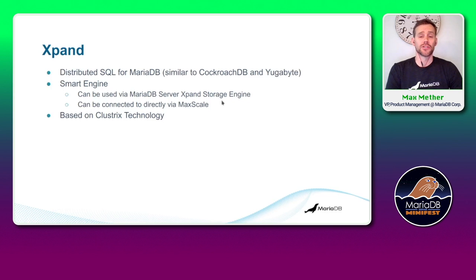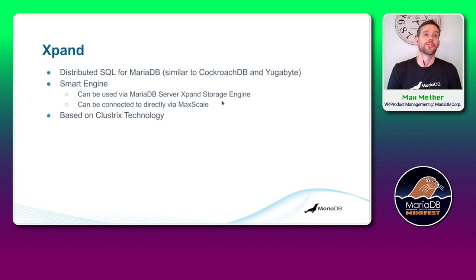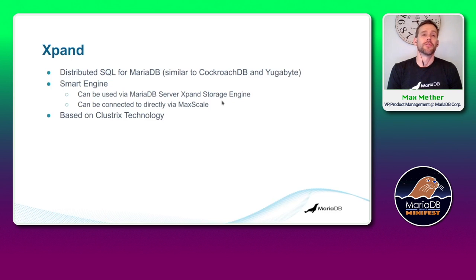Xpand is a smart engine. It exists in MariaDB as a storage engine, which means you can connect to it like a storage engine. But because Xpand has its own SQL parser, you can also connect to it directly and use MaxScale as a load balancer — so there are two ways of connecting. If you connect through MariaDB you get all of MariaDB's features; if you use a direct connection — what we call the performance topology — you have Xpand's native features available.